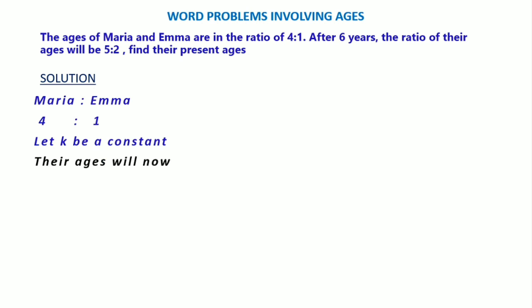Their ages now will be: Maria will be 4 times k, which is 4k. And for Emma, it will be 1 times k, which is k, because Emma's ratio is 1.